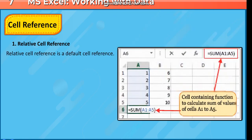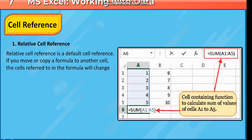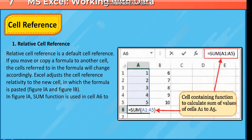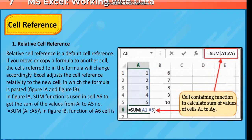Relative cell reference is a default cell reference. If you move or copy a formula to another cell, the cells referred to in the formula will change accordingly. Excel adjusts the cell reference relative to the new cell in which the formula is pasted. In figure 1a, the SUM function is used in cell A6 to get the sum of the values from A1 to A5, that is =SUM(A1:A5).